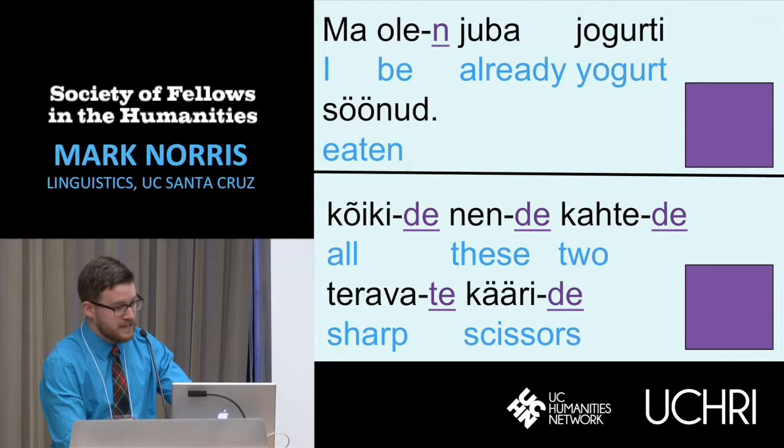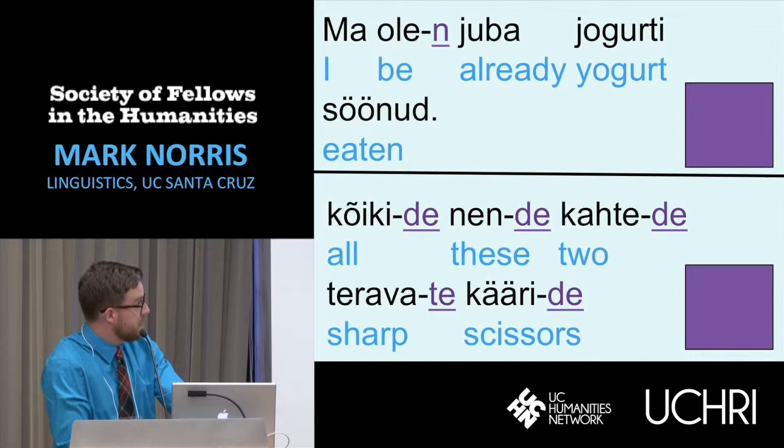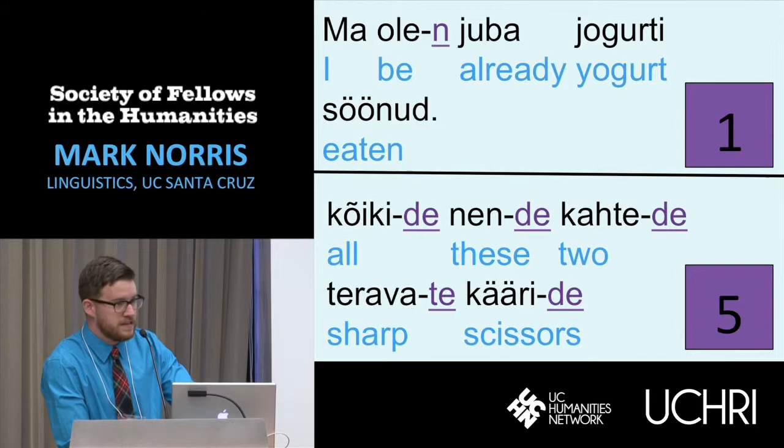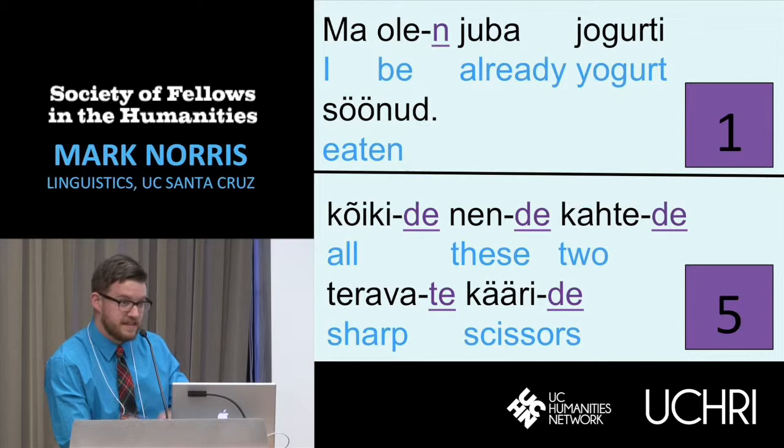I'm going to give you one descriptive piece of evidence. In the Estonian sentence 'maulen juba jogurti söhnut' — 'I've already eaten the yogurt' — there's only one instance of subject-verb agreement, and it appears on the verb; that's the little N at the top. But in the example of nominal concord — 'all these two sharp scissors' — notice that we have five instances of nominal concord, all those '-de' and '-te' endings written there. Simply the fact that there are more instances of it might make us think that something different is going on.